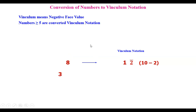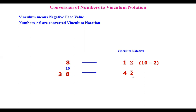Suppose I take another number, thirty-eight, and want to write it in vinculum notation. Take ten here: 10 minus 8 becomes bar 2. Next, to the left side, whatever number is there, one is added to it. So three becomes four. The meaning of this is: forty minus two is this number.